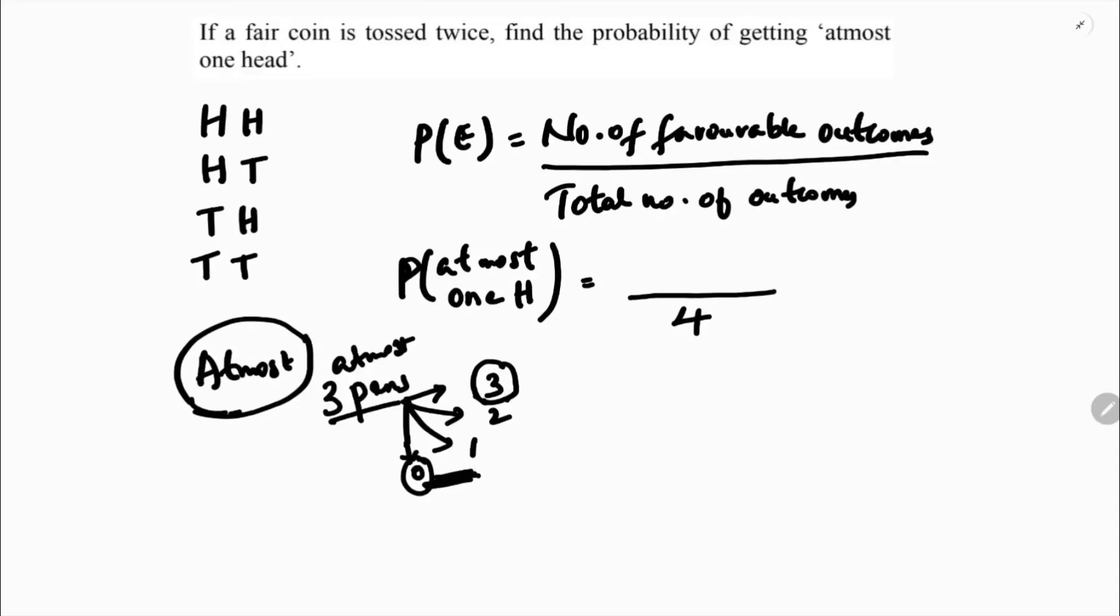The favorable outcomes for at most one head: this is favorable because it has one head, this also has one head, and tail tail is also favorable because it has zero heads. This head head we cannot take because it has two heads. So we have three favorable outcomes.